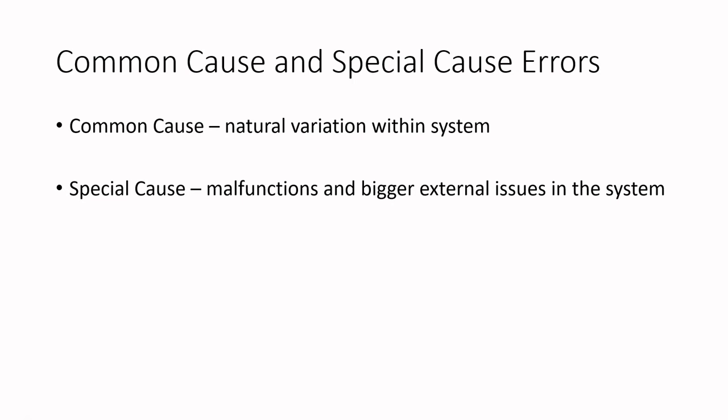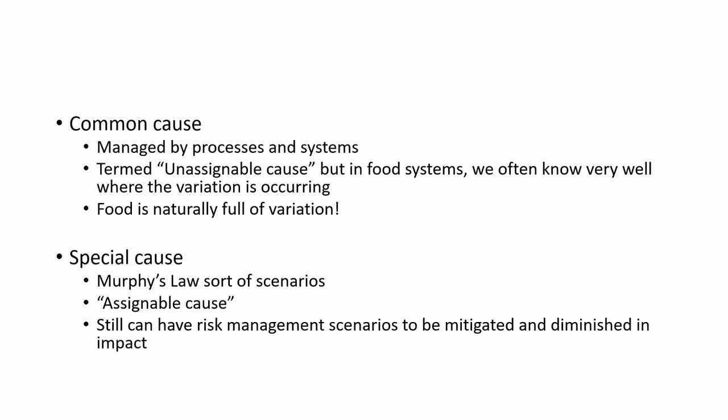What we need to be aware of is that irrespective of whether it's a common cause or special cause error, we need to be out there measuring. Here's a better slide summarizing these things. Common cause error being unassignable, the idea is that we know there's variation occurring. Special cause are these Murphy's Law situations where there's an assignable cause.